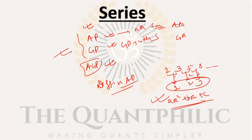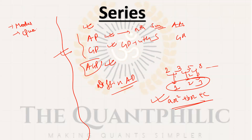So those are the topics to cover. To quickly summarize priorities: first, modulus and quadratic equation — these are VVIP, start from basics and go to higher level. Next, series — also very important. Inequality is VIP. Together, these are the VVIP and VIP topics you must prepare.